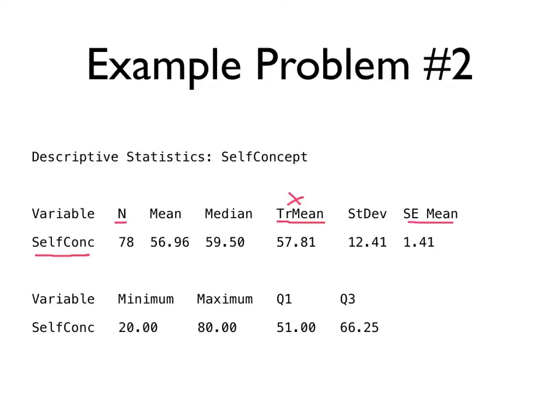Likewise, the standard error of the mean is not something that we'll really deal with until later on in the course. So we've got our mean, median, standard deviation, and then we've got the minimum, maximum, Q1 and Q3. Together with the median, these would make up the five-number summary.